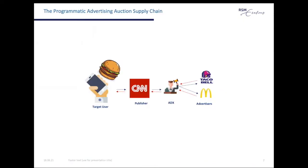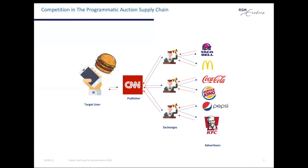In this slide you can see a very simplified representation of the programmatic advertising auction supply chain. On the left side is a consumer who really likes hamburgers, and on the right side are two fast food chains interested in showing them an ad. When the consumer connects to a publisher's website, like CNN, the publisher sends a bid request through the supply chain. Two advertisers bid for the ad space, and the ad exchange in the middle acts as a third-party auctioneer facilitating the clearing of an impression. In reality, demand for impressions is more scattered, and publishers work with multiple ad exchanges to ensure the allocation of their inventory.